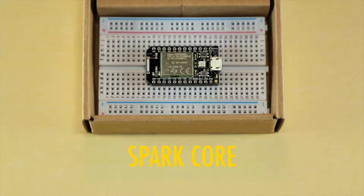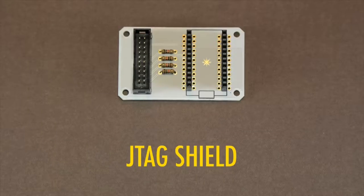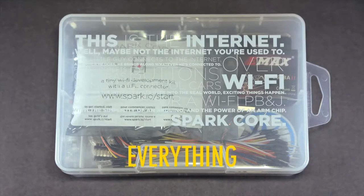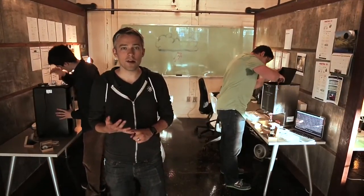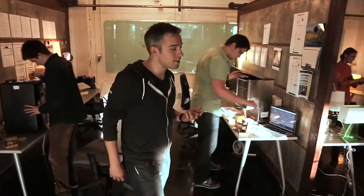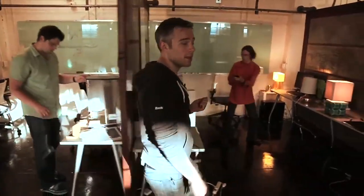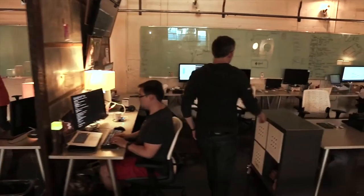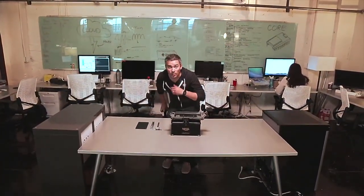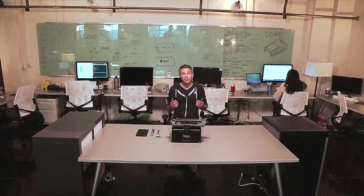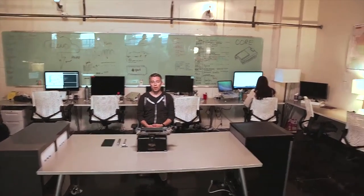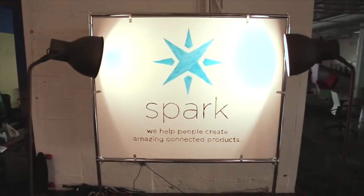We're Spark. We make an operating system for cloud-connected products — one that runs in the cloud, not on the device — which helps you make a smarter product without breaking the bank. We've got great developer tools that make it easy to build a connected product so that engineers, designers, artists, and students can join the Internet of Things. Now your products can communicate with one another, learn your preferences, and show intelligence — not just pressing a button to turn on lights from your iPhone, but lights that turn on automatically because the sun went down.